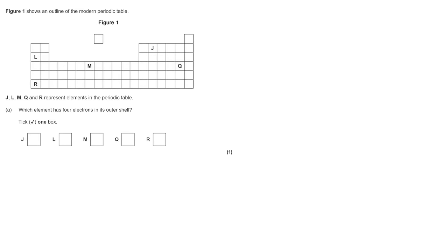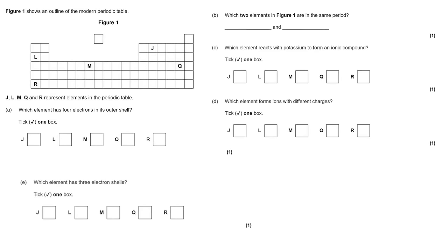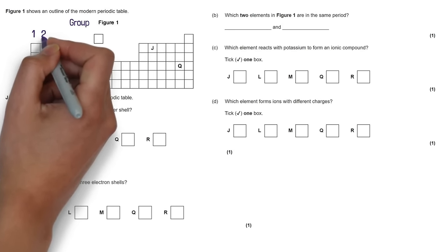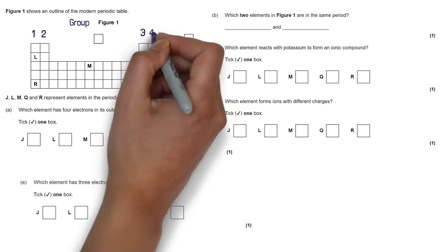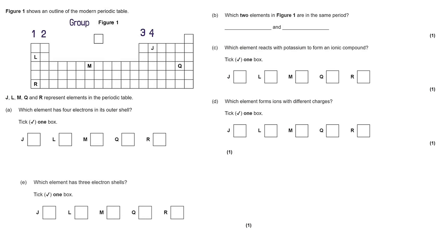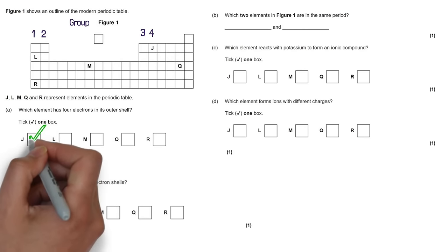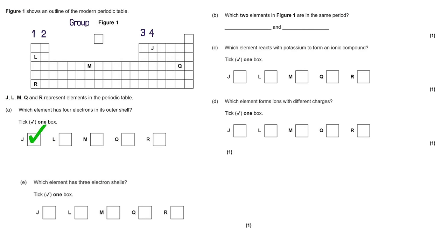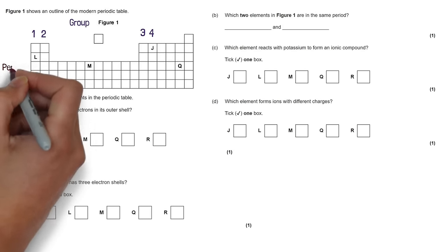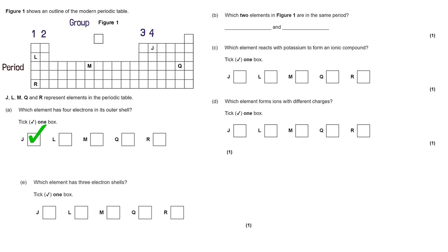There are multiple choice questions based on figure 1, an outline of the modern periodic table. Which element has 4 electrons in its outer shell? We need to find which element is in group 4 — that is J. Which two elements in figure 1 are in the same period? We look at the rows, and M and Q are in the same row.